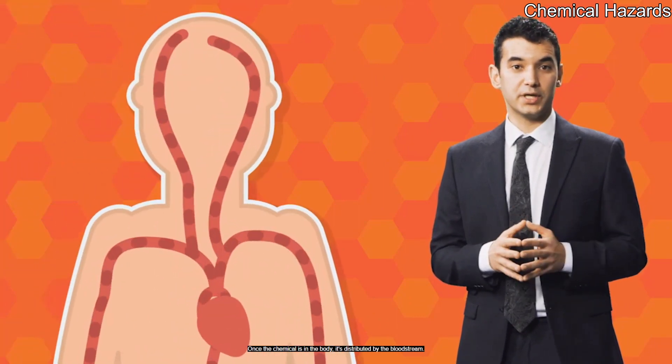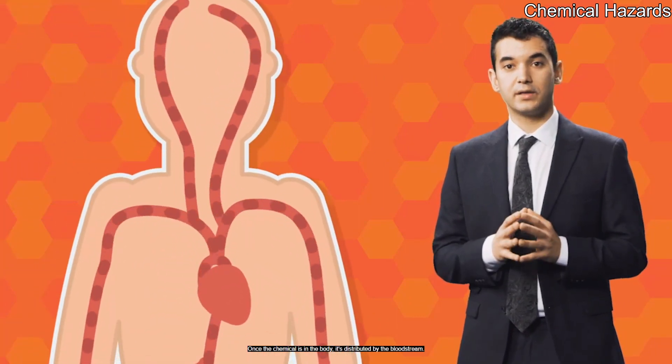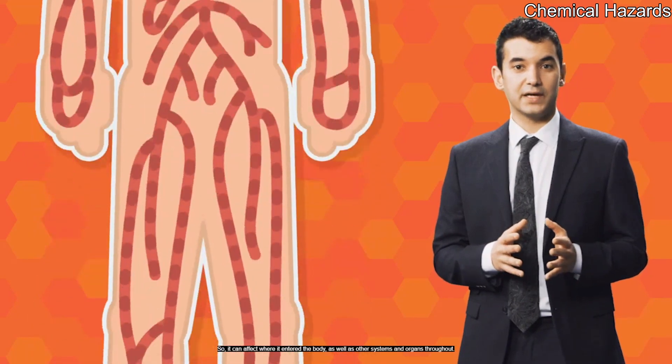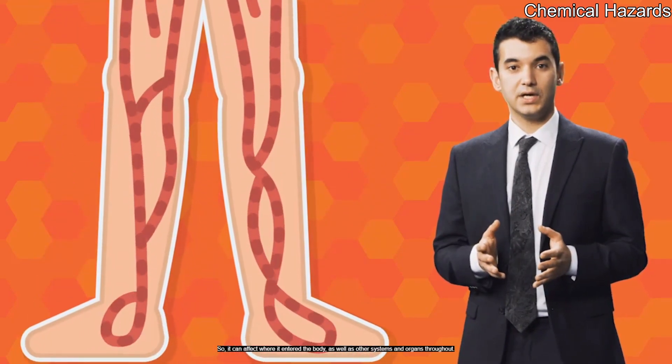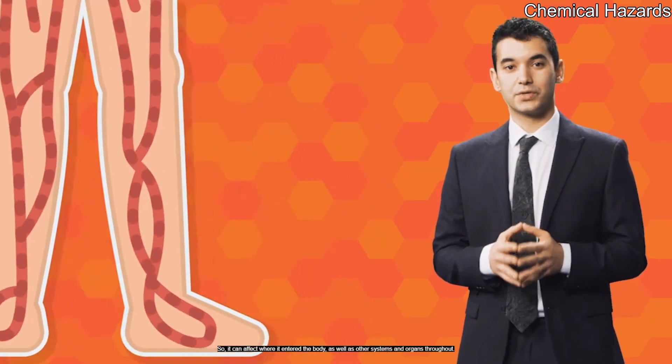Once the chemical is in the body, it's distributed by the bloodstream, so it can affect where it entered the body, as well as other systems and organs throughout.